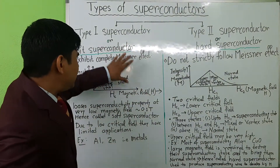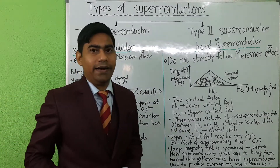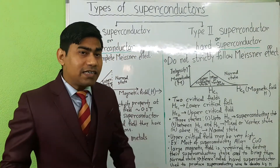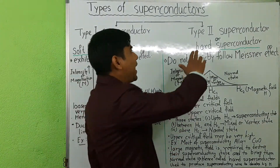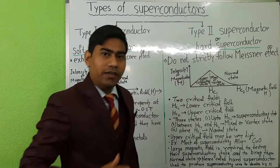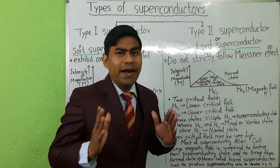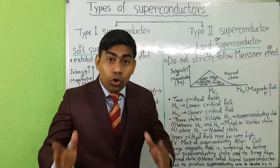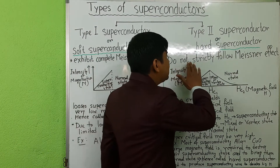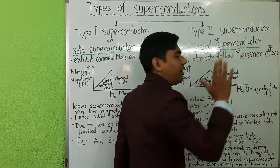This is type 1 superconductor. Now we discuss type 2 superconductors. Type 2 superconductors are those which do not strictly follow the Meissner effect.